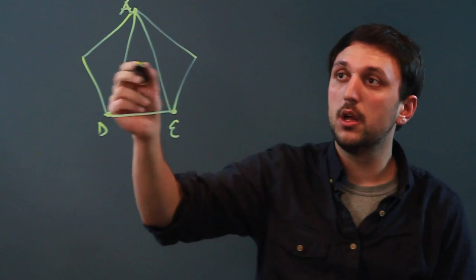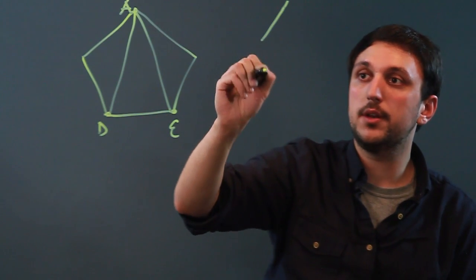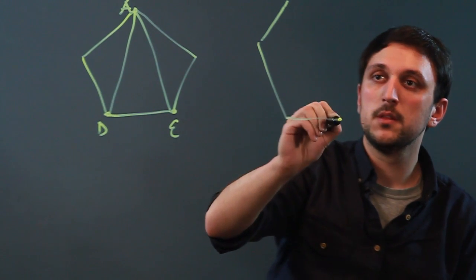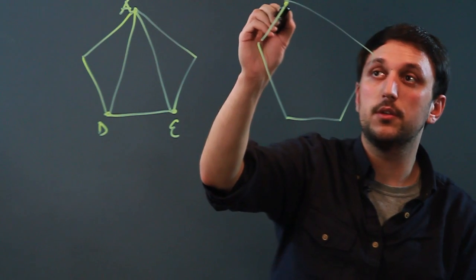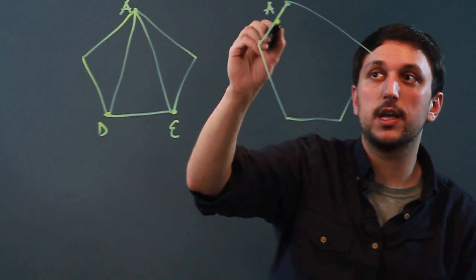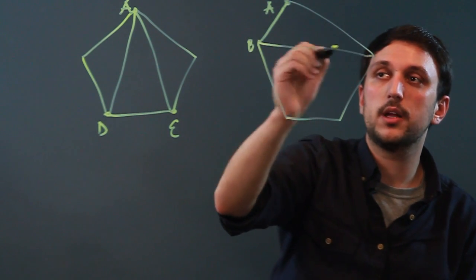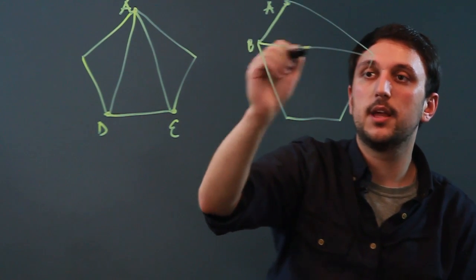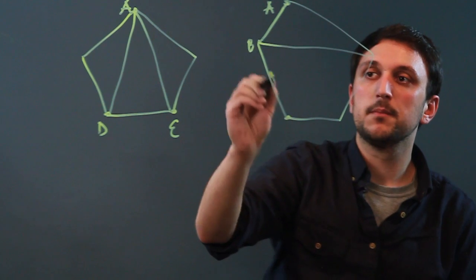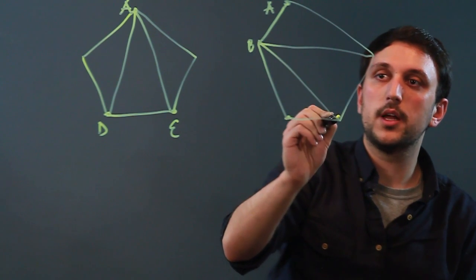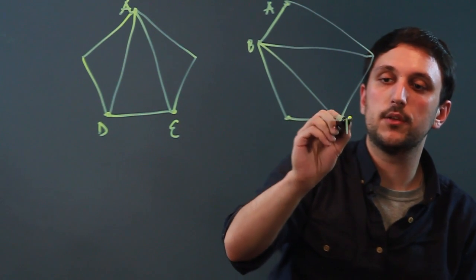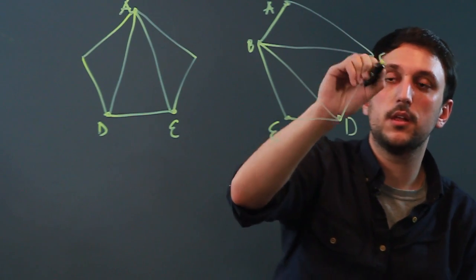However, we could also draw it differently, different triangles. That was a terrible pentagon. And if we call this vertex A and this vertex B, we could also draw this triangle from vertex A and then say, this triangle from vertex B down to D and E and C.